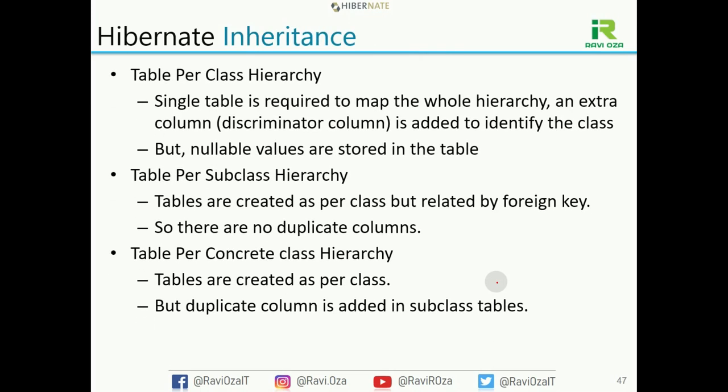Let's discuss the first one: table per class hierarchy. Only one single table is required to map the whole hierarchy. Whatever inheritance you have done in Java, only one table is required. However, an extra column — which is a discriminator column — is required. This extra column is added as a separator column to identify the class. But nullable values are stored in the table.